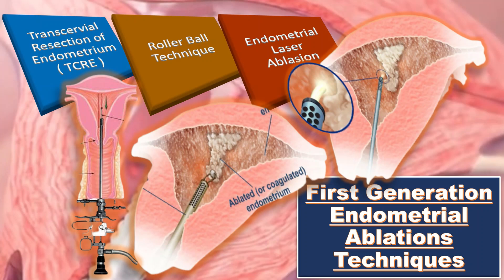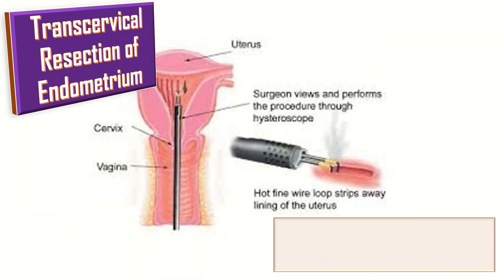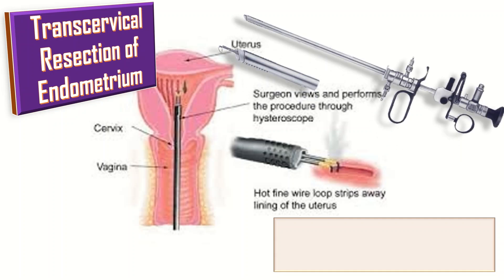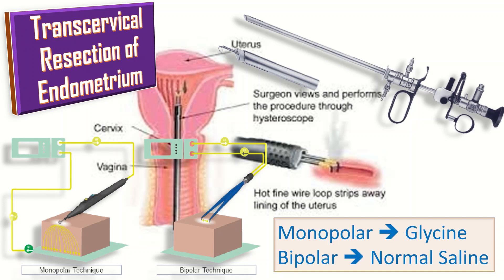Trans-cervical resection of endometrium (TCRE) involves resecting the endometrium using a 3 mm electrosurgical loop with a resectoscope. Both monopolar and bipolar energy source resectoscopes are available. In monopolar, glycine is used as a medium, and in bipolar, normal saline is used.